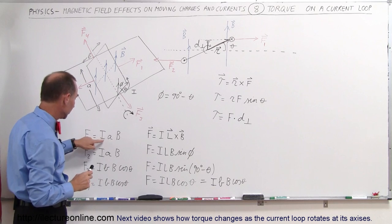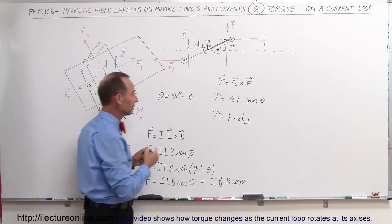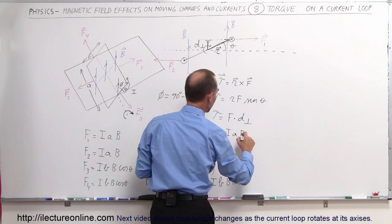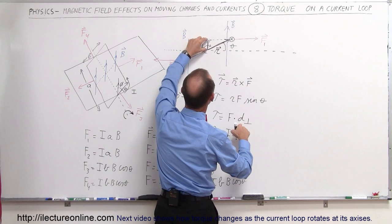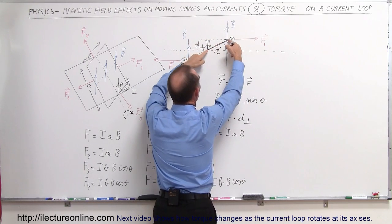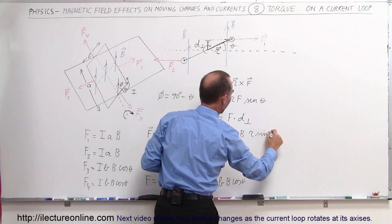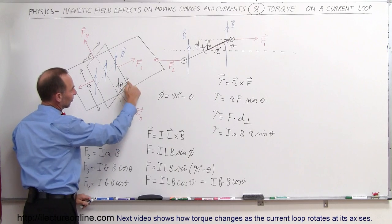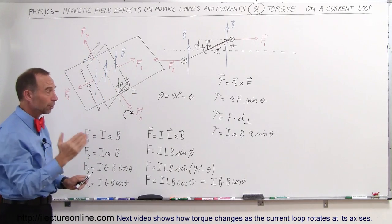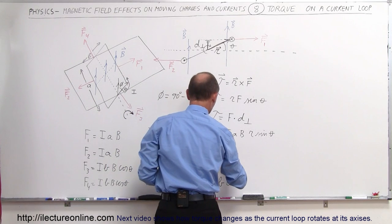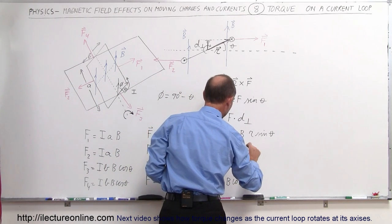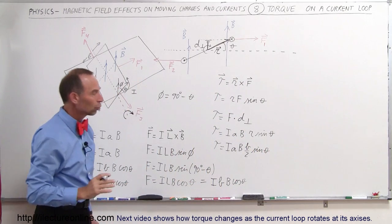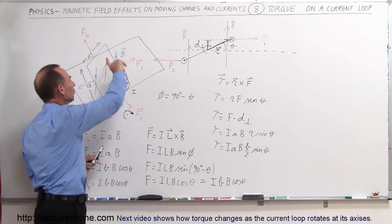The force — what we discovered here — was IAB. So the torque is equal to I times A times B times the perpendicular distance, which is R times the sine of theta. Now, what is R equal to? R is this distance right here, which is half of this distance, which would be half of b. So we replace R by b over 2, and the torque is equal to I times A times B times little b over 2 times the sine of theta. That would be the torque on this part of the wire.